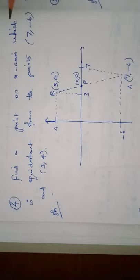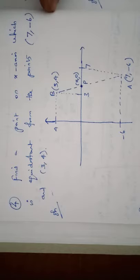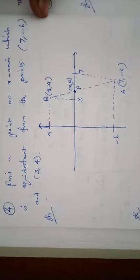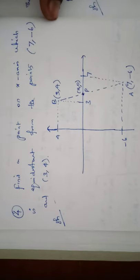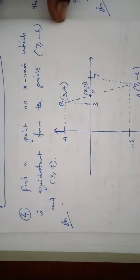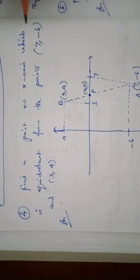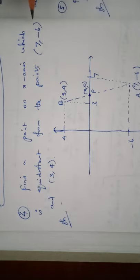Question number 4: Find a point on the x-axis which is equidistant from the points (7, -6) and (3, 4).